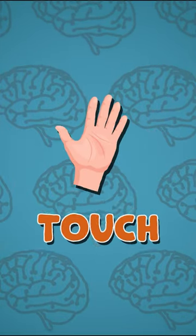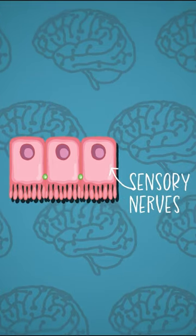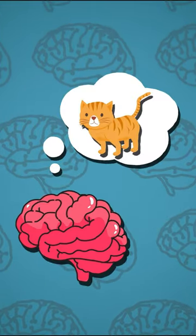Touch: We touch things with any area of our skin. The sensory nerves, which lie under the skin, tell the brain what you are touching.